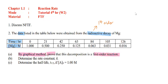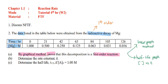You need to prove it. For the graphical method, we have two different methods: the first is the linear graph method, and the second is the half-life graph method. For the half-life graph, you just plot concentration versus time, and then compare the first half-life with the second half-life.